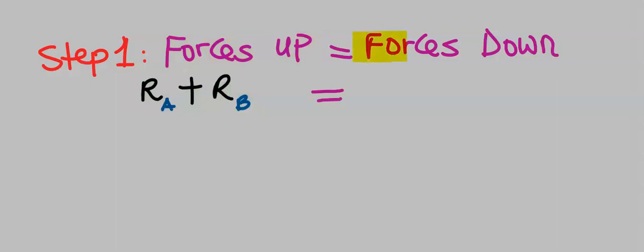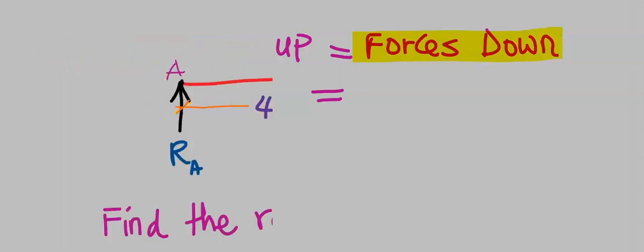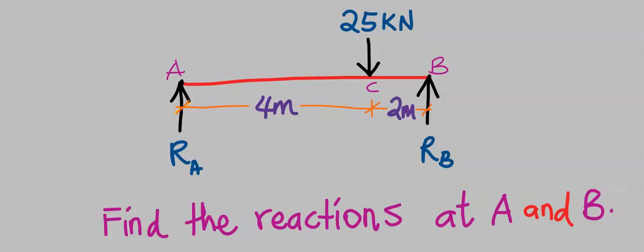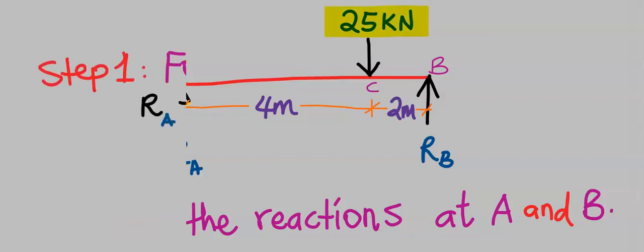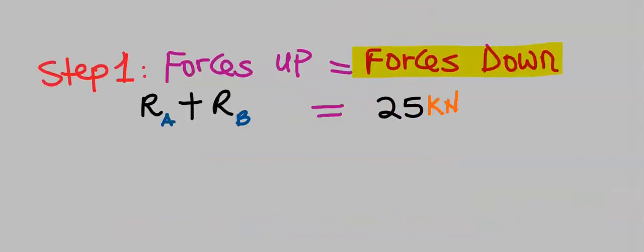Next, let's consider the forces coming down on the beam. The only load on this beam is 25 kilonewtons, hence the downward force on the beam is 25 kilonewtons.